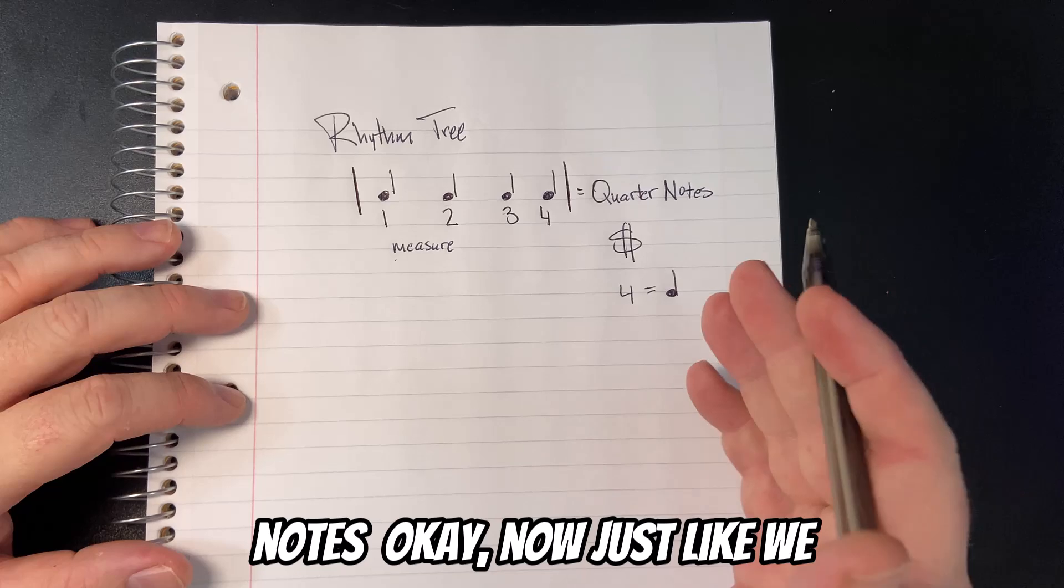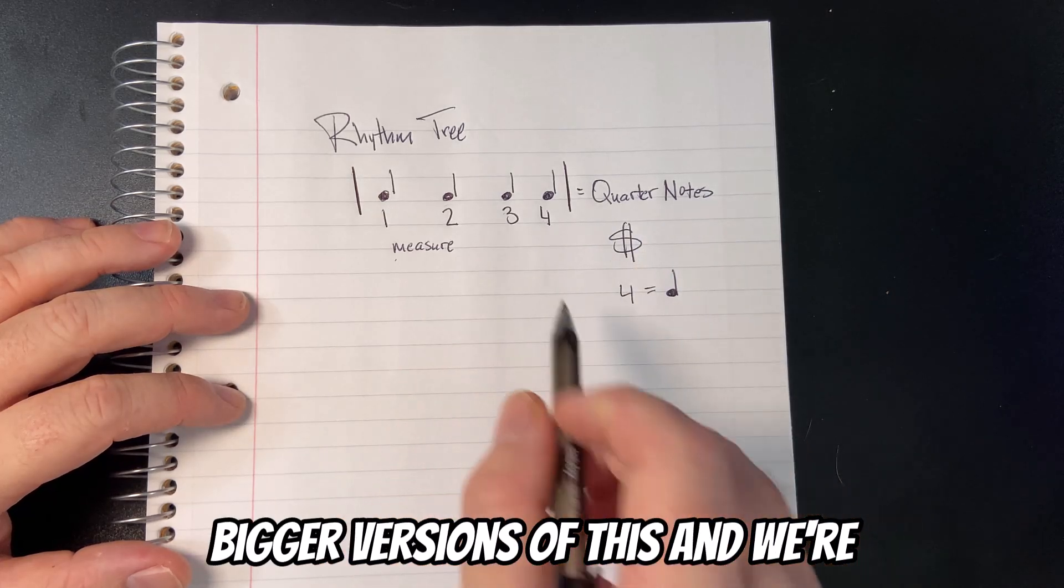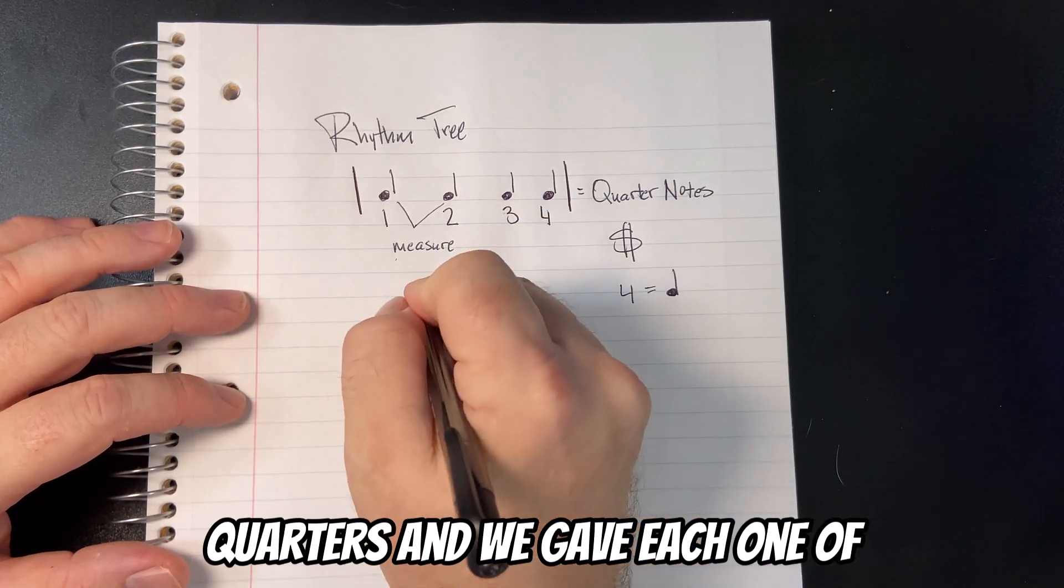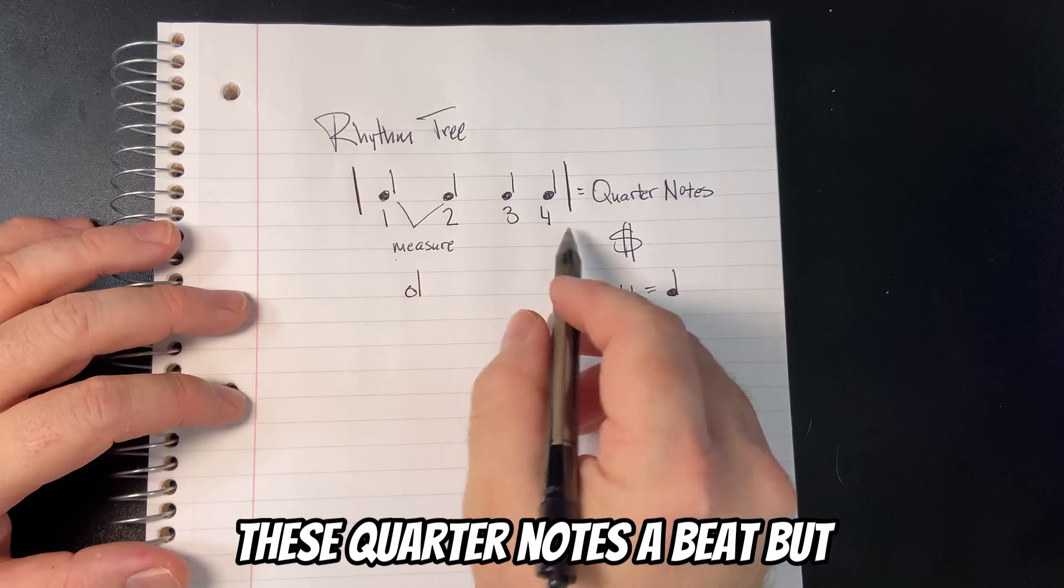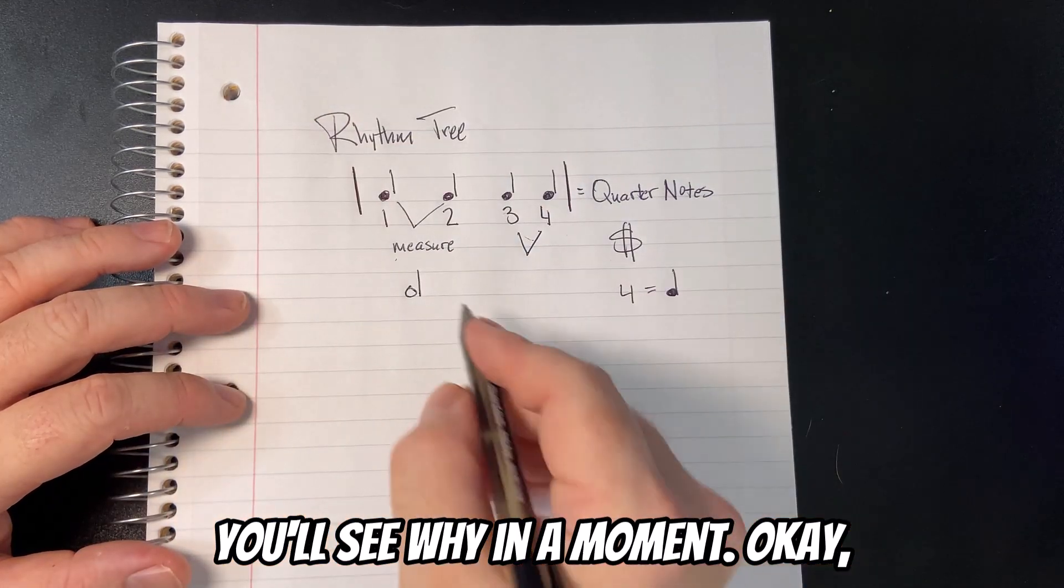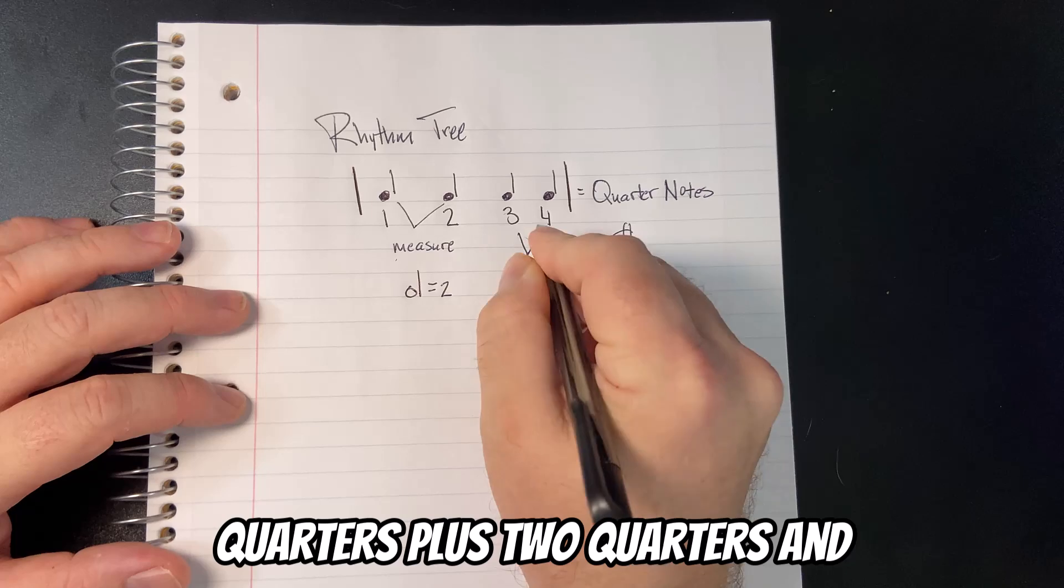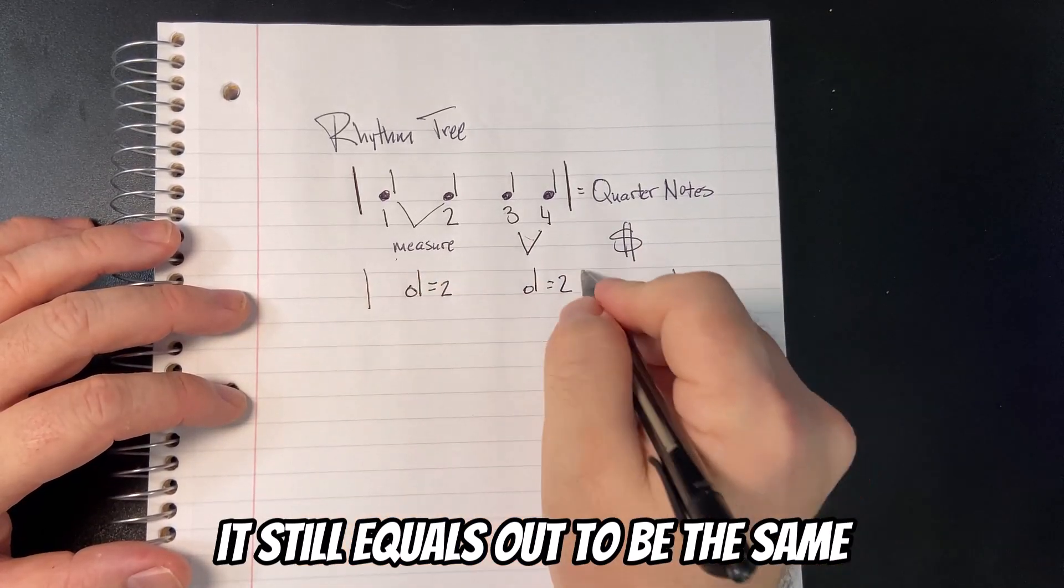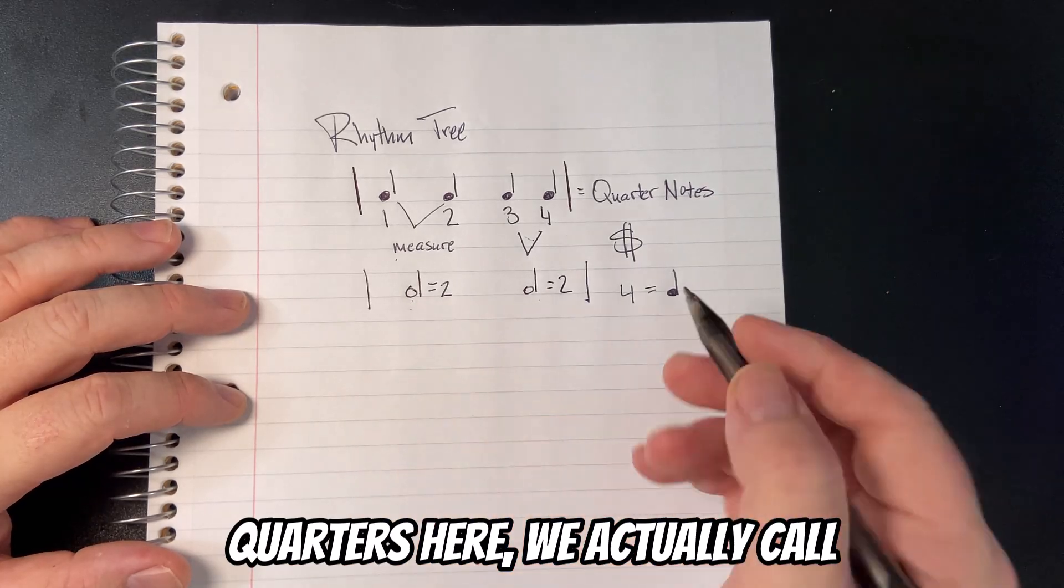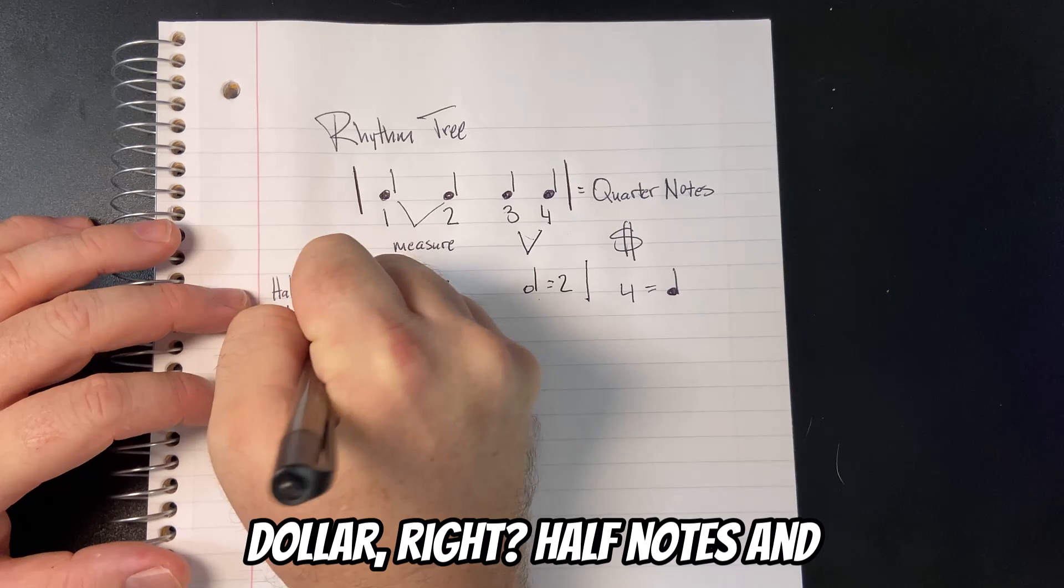So let's recap. We have our pulse. We are calling these quarter notes. Now, just like we related it to money, there are four quarters in a dollar. Well, we also know that there are bigger versions of this. Say you combined two quarters. We gave each one of these quarter notes a beat, but now we're going to combine them. We actually call these guys half notes, kind of like a half dollar.